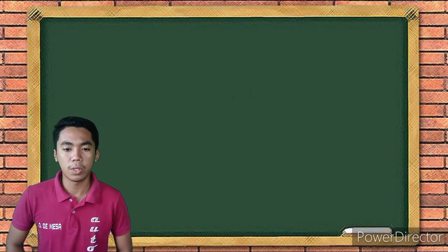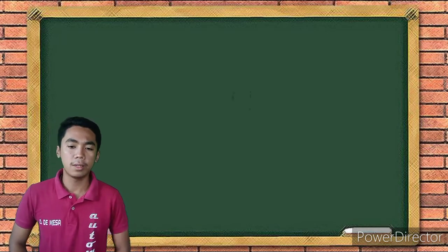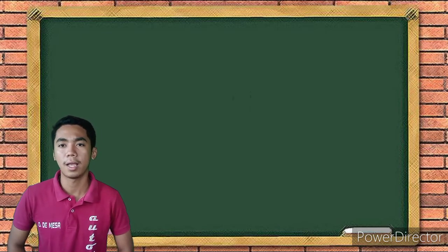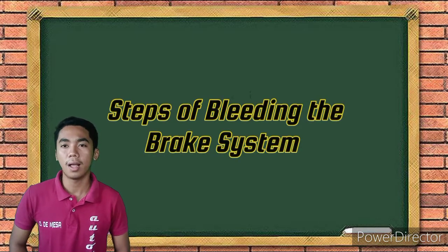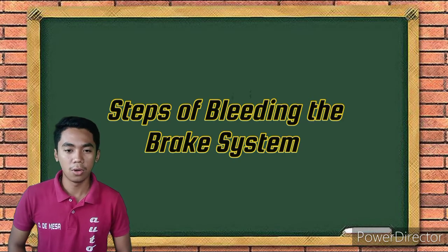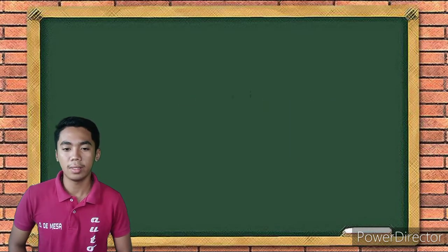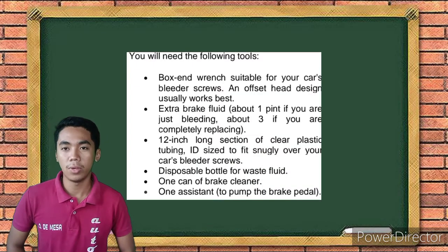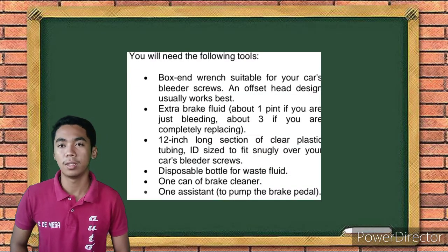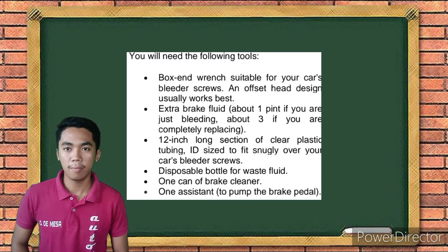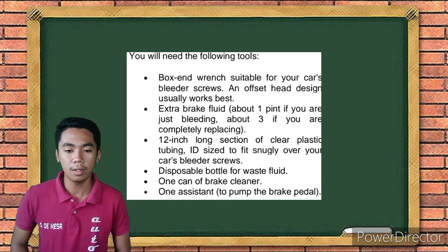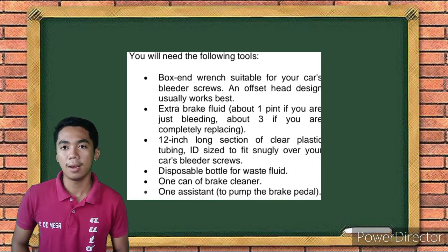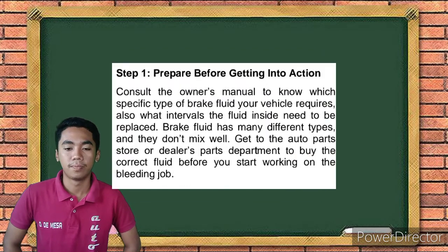Now let's move forward with the steps on bleeding the brake system. Is there someone here who already knows the steps of bleeding the brake system? None, sir. I will discuss the 9 basic bleeding process steps. First, let's know what tools we need. You will need: a box-end wrench suitable for your car's bleeder screw, extra brake fluid, a 12-inch long section of clear plastic tubing, a disposable bottle for waste fluid, one can of brake cleaner, one assistant to pump the brake pedal, and a jack and jack stands.